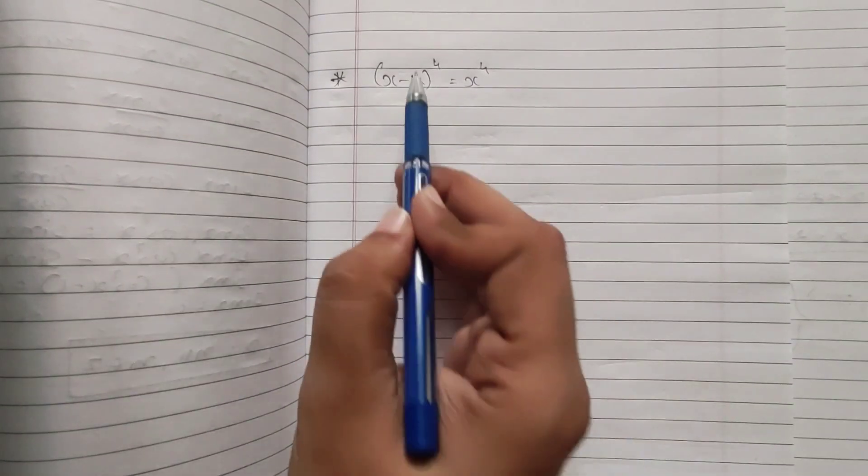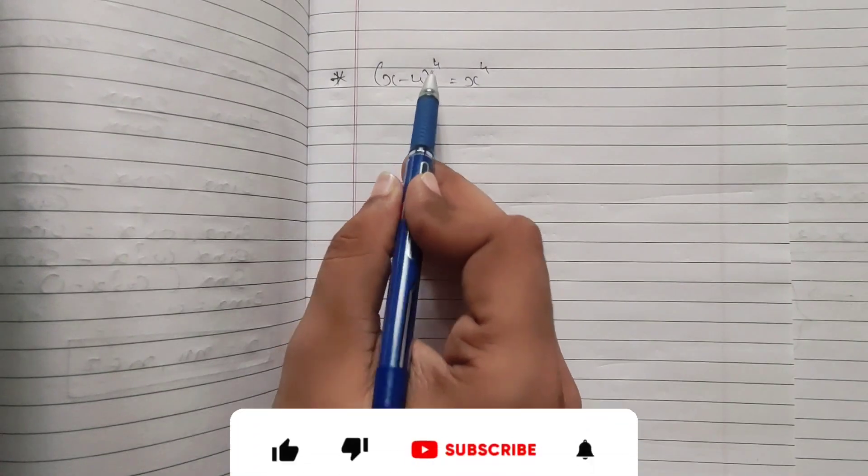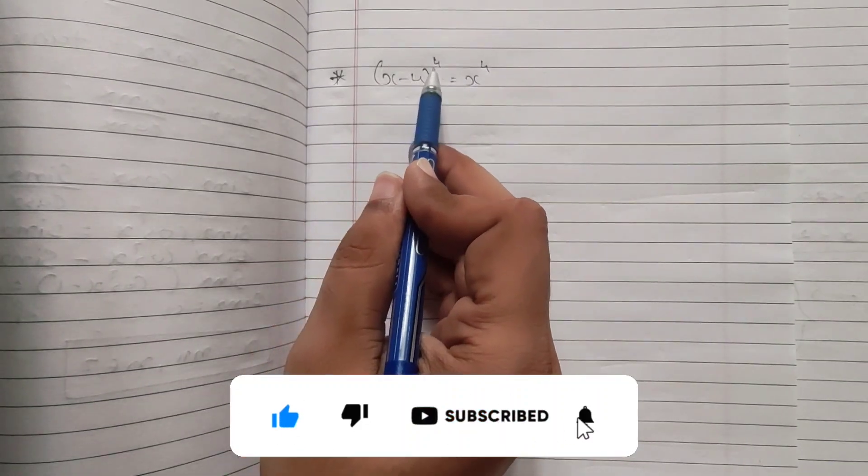Why? Because we have a higher power here. Normally we see power 1, 2, or 3, but in this question we have power 4. Now let's see how we can solve this kind of question whenever we have power 4.